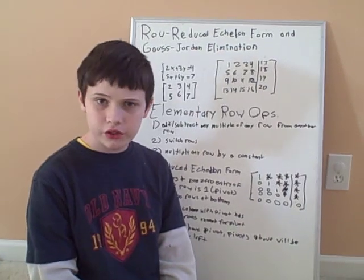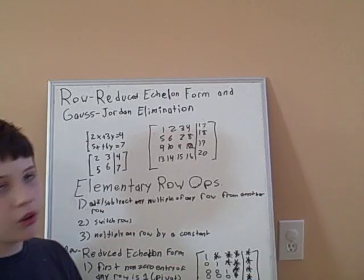Hello, this is Jacob Barnett, and I'm here with part two of my lecture, or tutorial, on Row-Reduced Echelon Form and Gauss-Jordan Elimination, and how to solve a matrix.